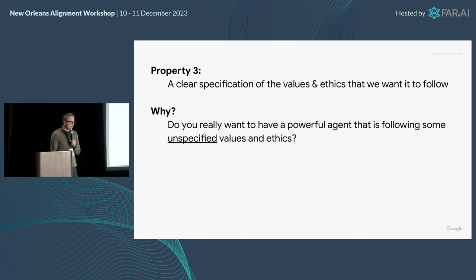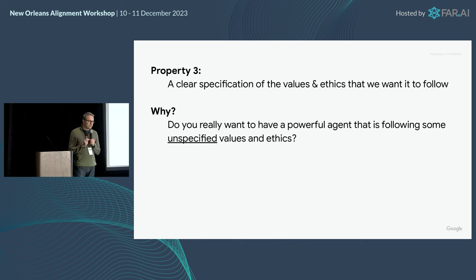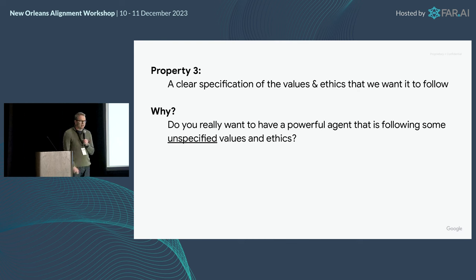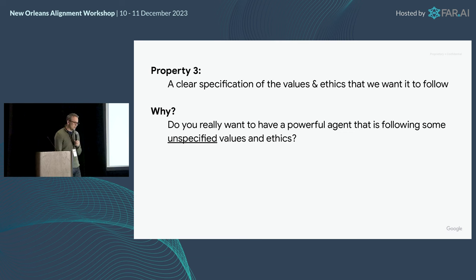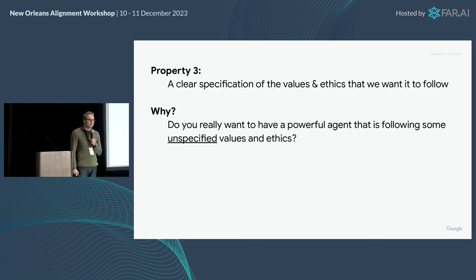Property three: you need to give the agent a clear specification of the values and ethics that you want it to follow. Think about it — what's the alternative? You have an agent that follows unspecified values and ethics? That's not good. So we're going to have to tell the agent what values and ethics we want it to follow.